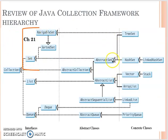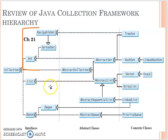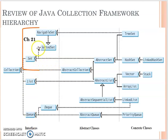Now let's talk about set. We already saw the hierarchy under the collection from the previous module. We have three different kinds: the list — that's where we have stack and array list; the queue — where we have linked list and priority queue; and finally, the set. The set is just an interface, and then you have the sorted set, which is also an interface. The tree set is inherited from the sorted set.